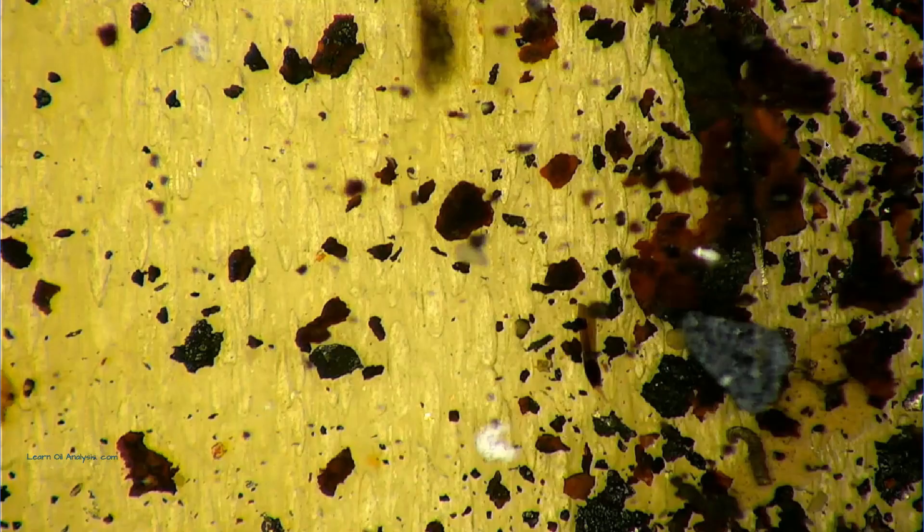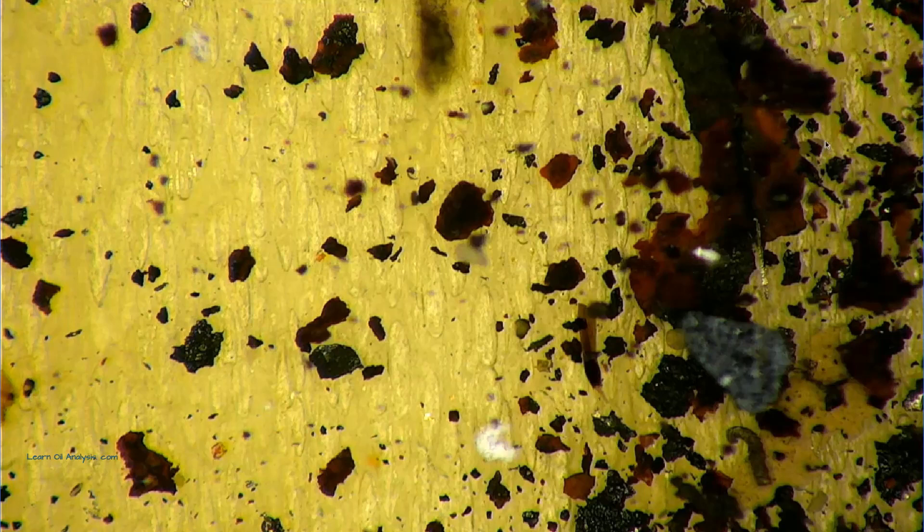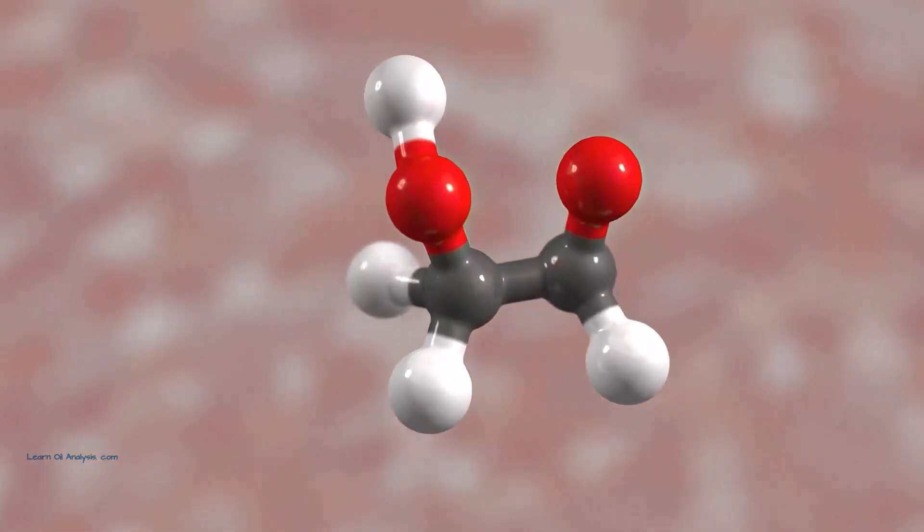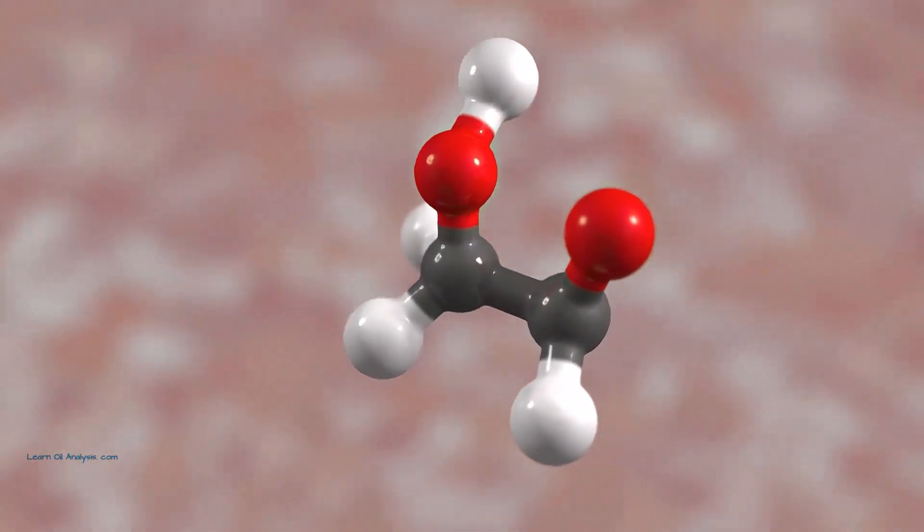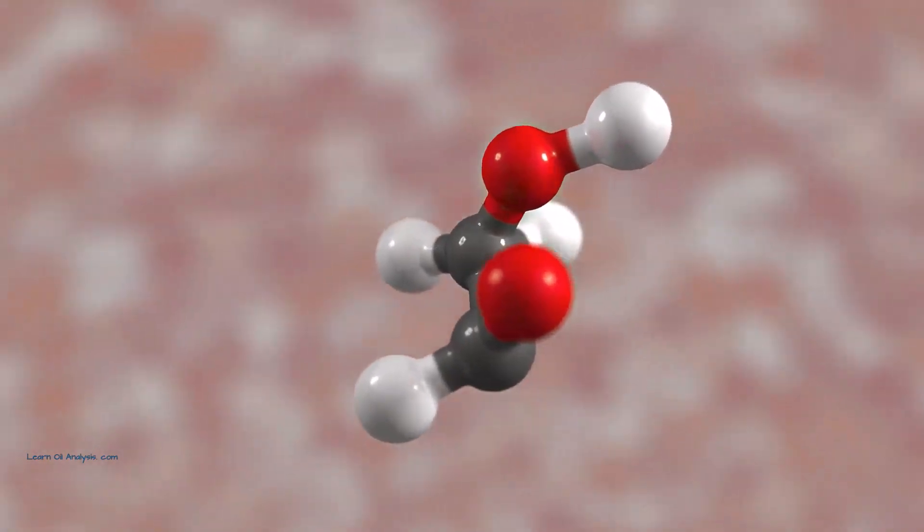Contrary to popular belief, it's the sulfur in ZDDP, not the zinc or phosphorus, that gives it anti-wear properties. The ZDDP molecule is a complex structure comprising sulfur, phosphorus, zinc, and oxygen.